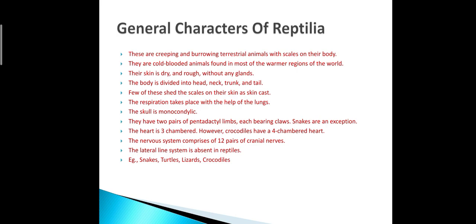Like amphibian animals, reptilians are also cold-blooded, meaning poikilothermic — they can change their body temperature with respect to atmospheric temperature. The skin is dry and rough without any glands. The body is divisible into head, neck, trunk, and tail. Some of them shed the scales on their skin as a skin cast; this process is called molting.